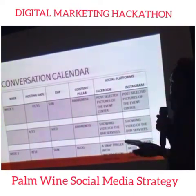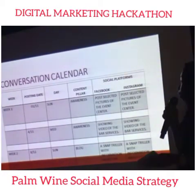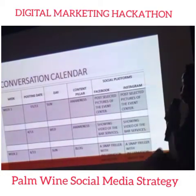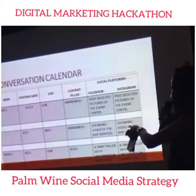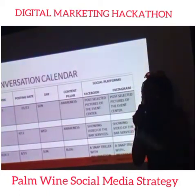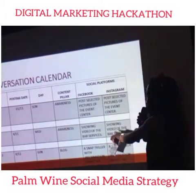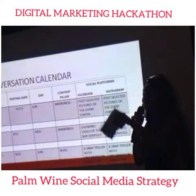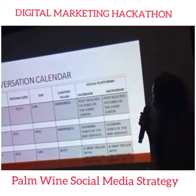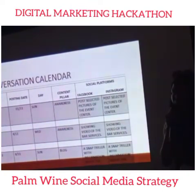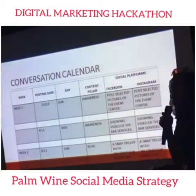The content calendar is a schedule listing two to three planned posts per week for an entire month, broken into four weeks. For the first week, we run one ad for four days, then the next ad begins. On the first day — Sunday — our content pillar is awareness: we post selected pictures of the event center on Facebook, also running on Instagram. On the second awareness post after four days, we show a video of the bar services. For week two, the first ad will be a blog with a snap thriller.